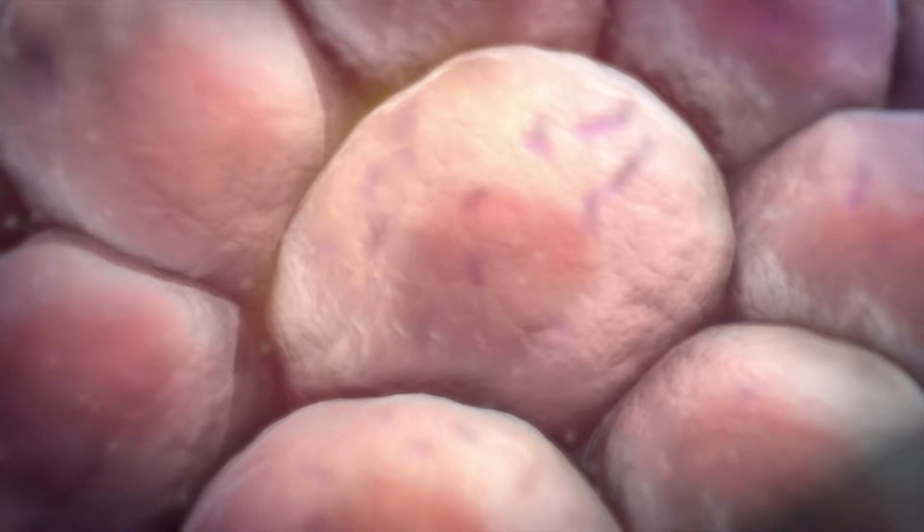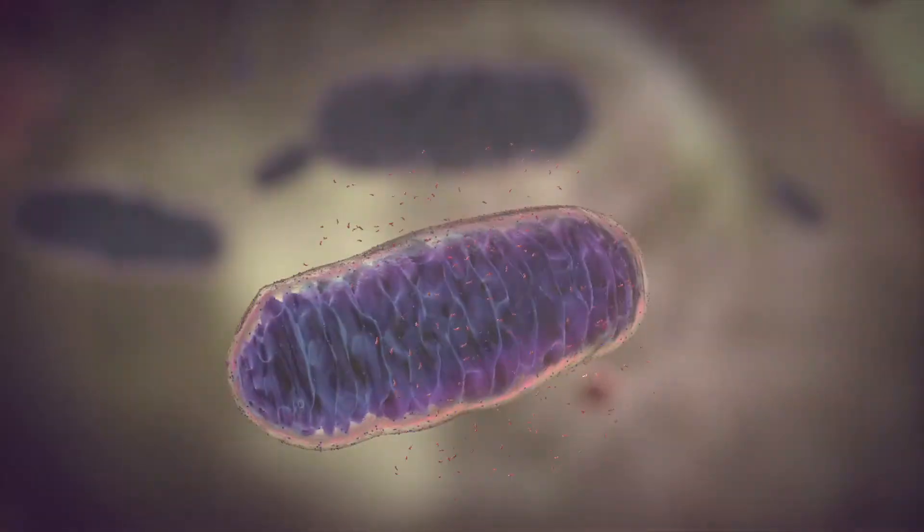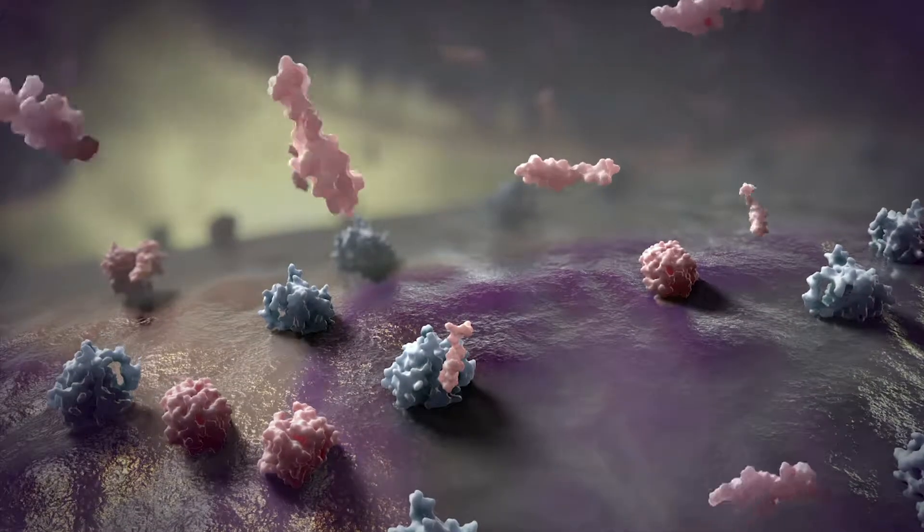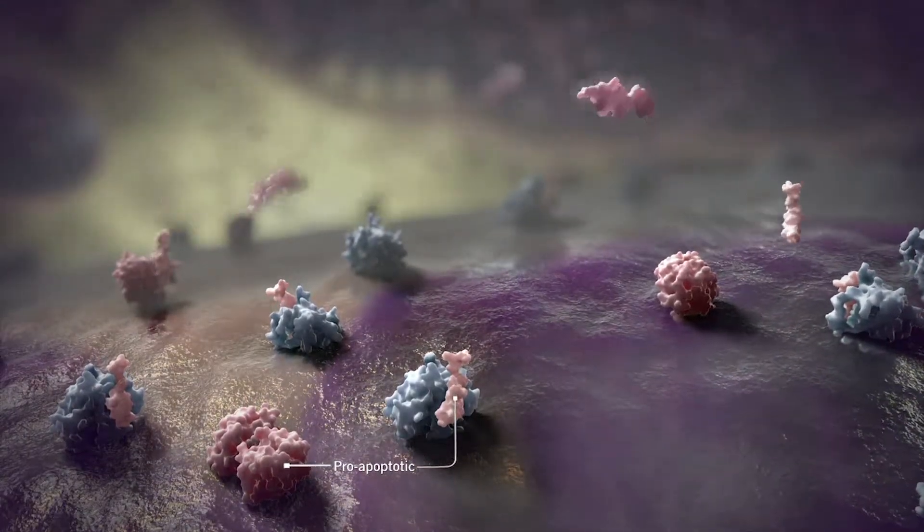In response to stress, normal cells, as well as certain cancer cells, will upregulate pro-apoptotic family members. In normal cells, this increased expression of pro-apoptotic proteins is sufficient to induce apoptosis.